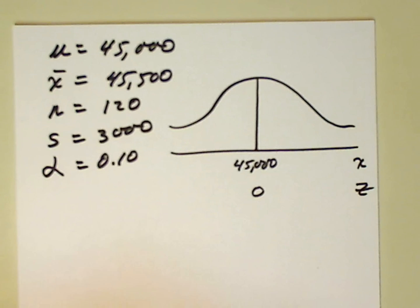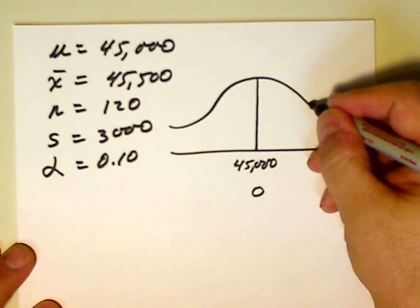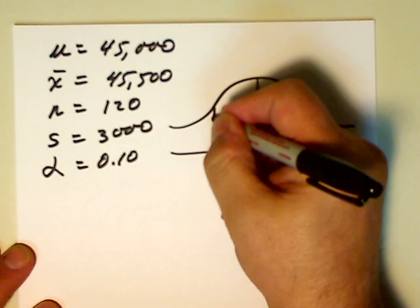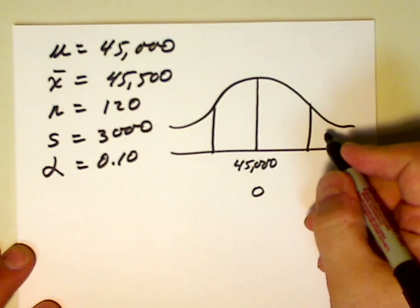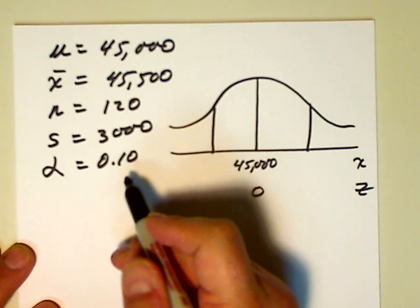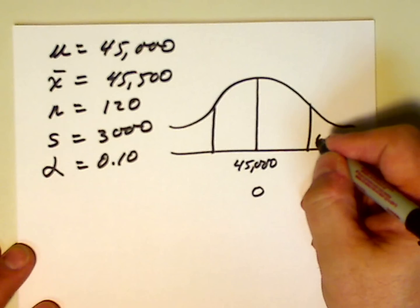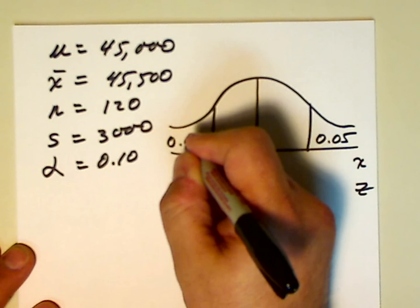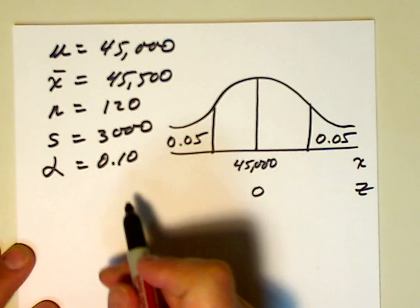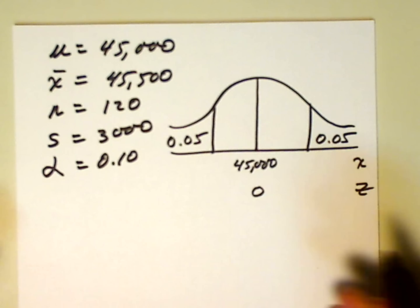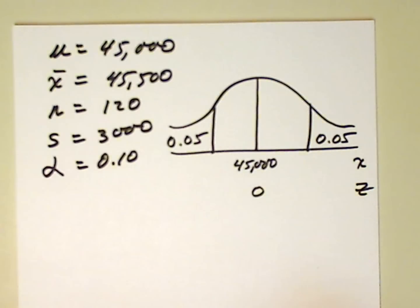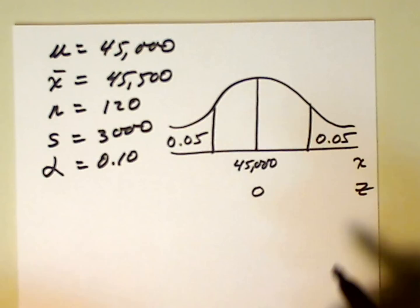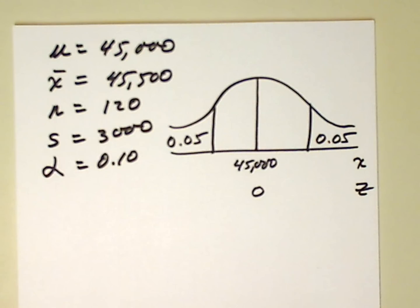So, not equal to, different than. It's a two-tail test. So, here and here. And we're working to the 10% level of significance. So, we're going to have 0.05 in each tail, because the level of significance, 0.1, is telling us, overall, how big the region is, the reject region. So, overall, it's 0.1 that gives us 0.05 in each tail.